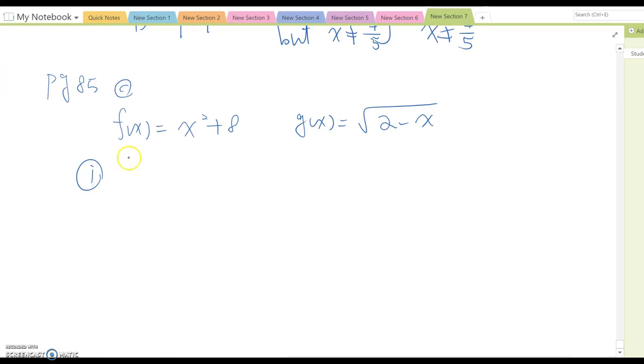So number one, f plus g of x here. Okay, this case, now we can make this is x squared plus 8 plus square root 2 minus x here. So then this becomes x squared plus 8 plus square root 2 minus x.